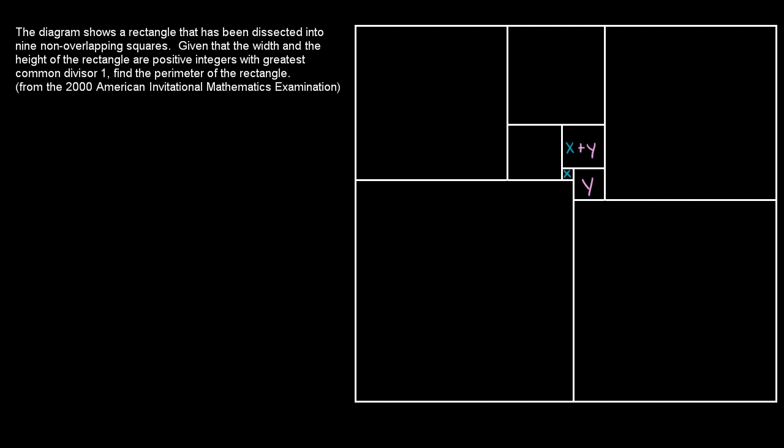Then this one over here, if this dimension is x plus y and this dimension is x, then this whole side is going to be the sum of that. So x plus x plus y is 2x plus y. I'm just labeling the left side of each of these squares. And then we can go to this one up here. If this distance is 2x plus y, and this distance is x plus y, you add them together to get 3x plus 2y.